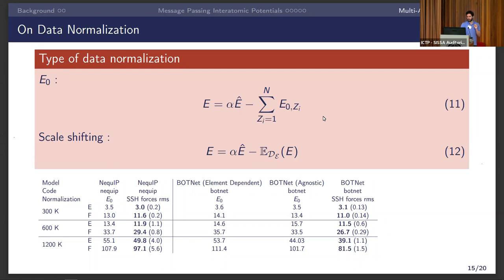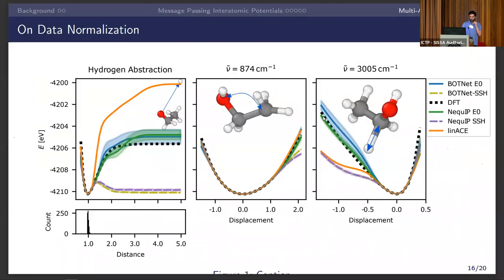Normalization choices also affect generalization. Using scale-shift normalization gives very good in-domain accuracy, but when doing out-of-domain tests involving extreme abstraction or bond-stretching modes, those models completely fall apart and cannot represent the potential energy surface correctly. The reason is that the wrong dissociation limit is encoded. Both in stretching modes and abstraction, the scale-shift models — though more accurate in-domain — completely fail out of domain.